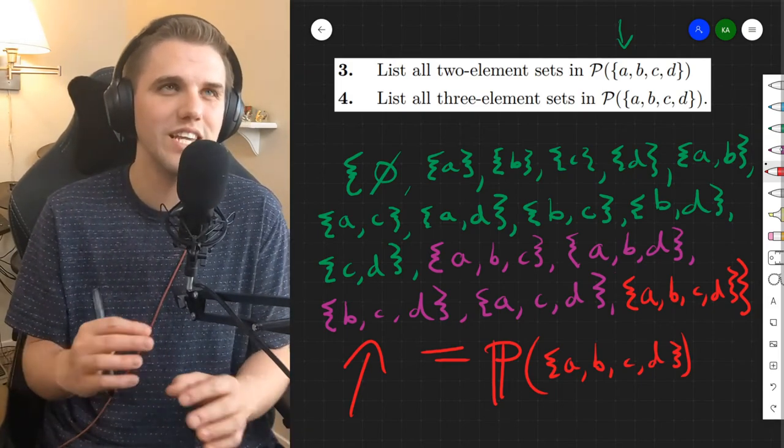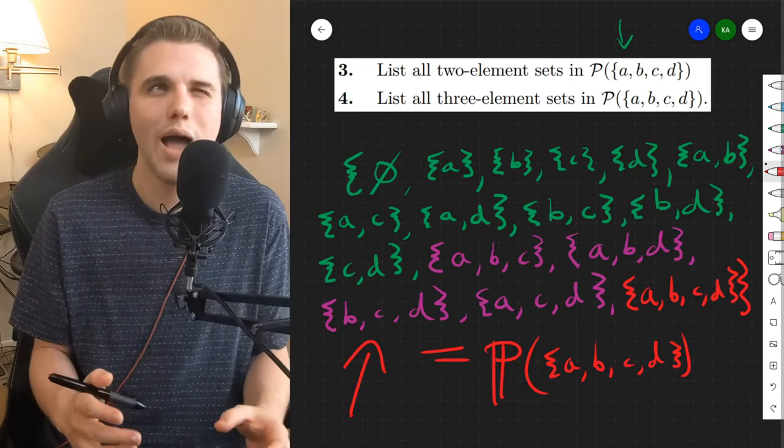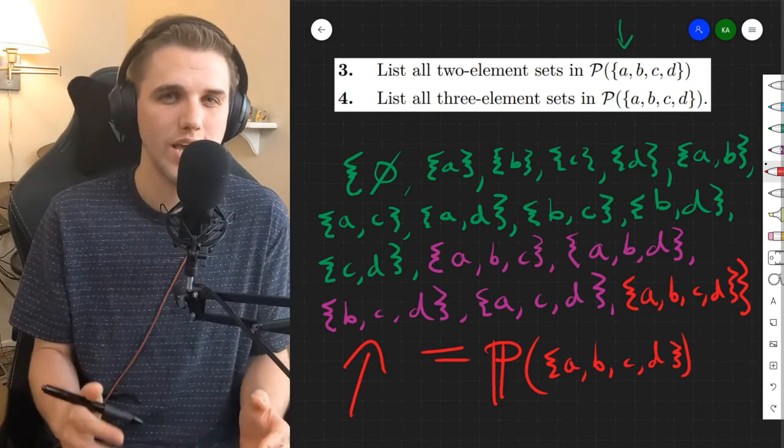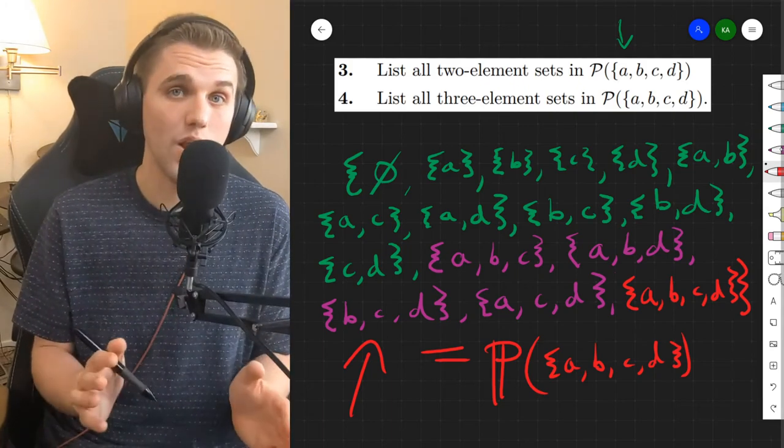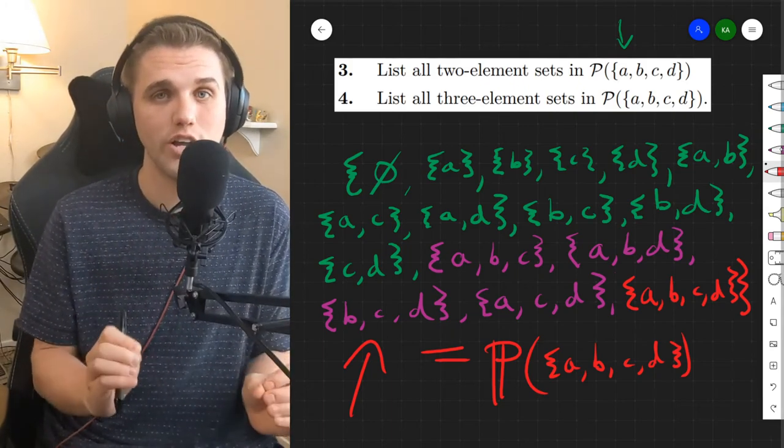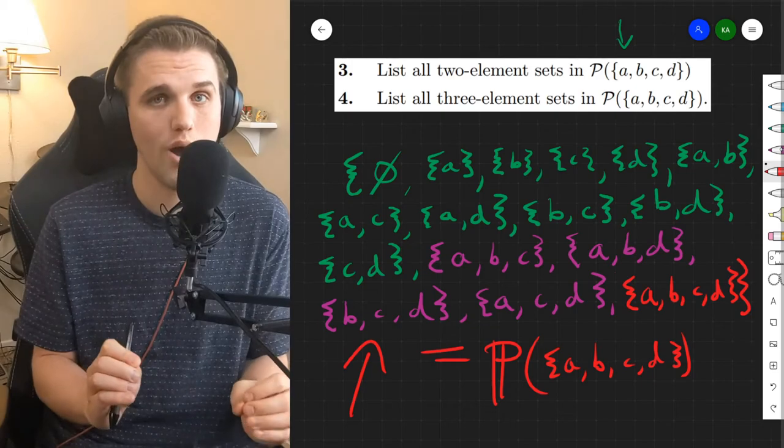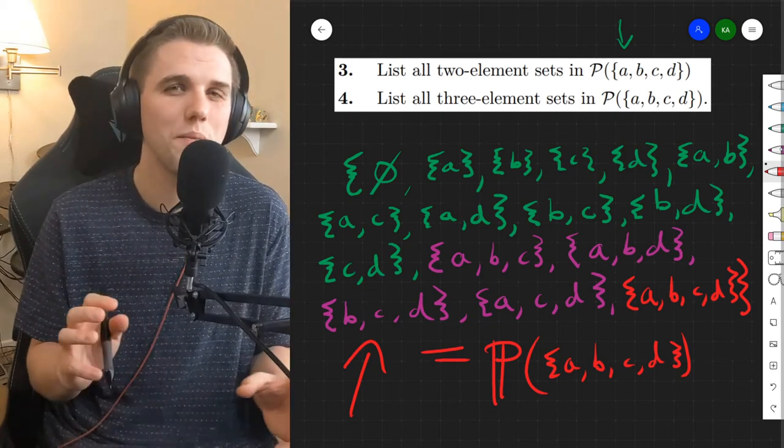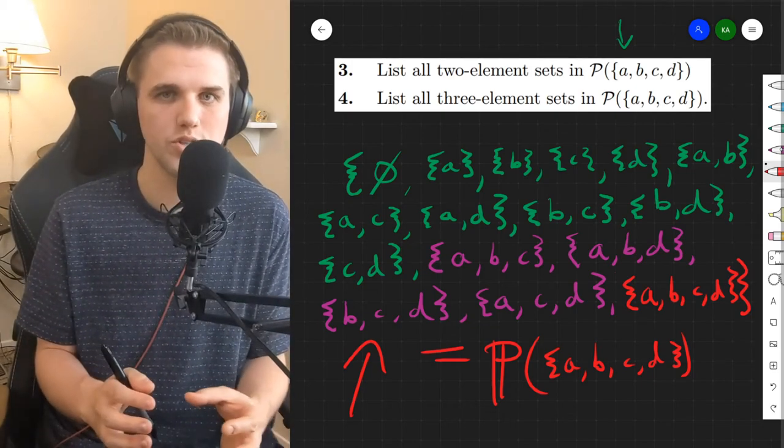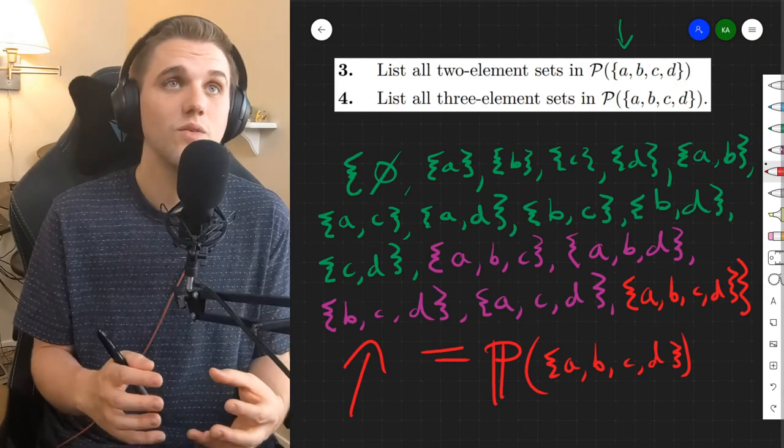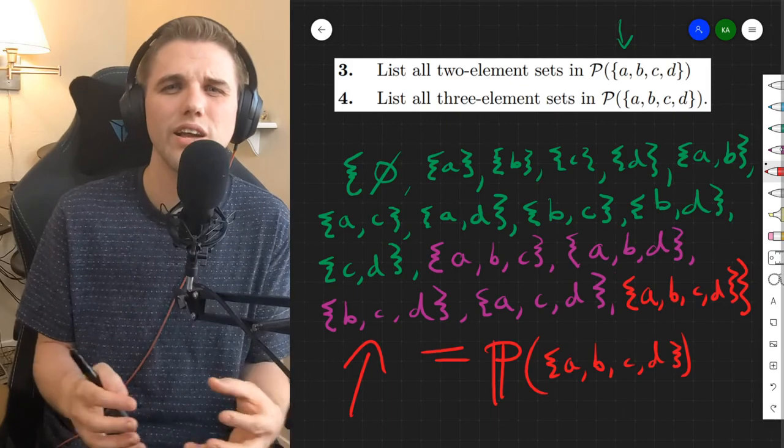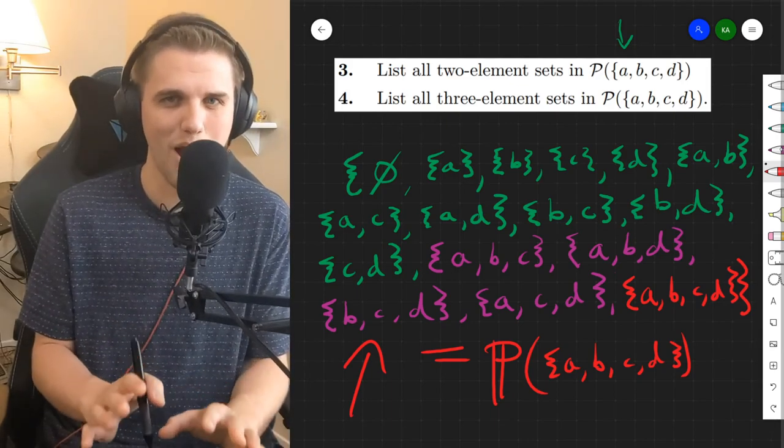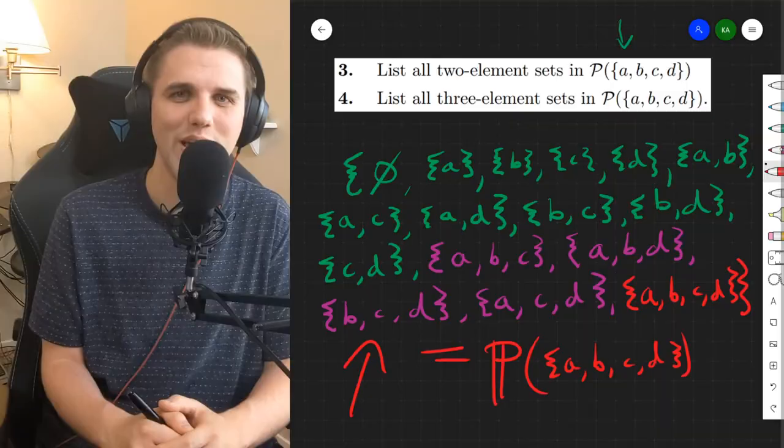But we haven't really given a detailed explanation for why problem two is six. What's the six about? Well, again, we'll address this specific question multiple times throughout this course, but I still want to build more tools so that we can analyze why this number is six a little bit clearer. We'll get to that, I promise. Thanks everyone and I'll see you all in the next video.